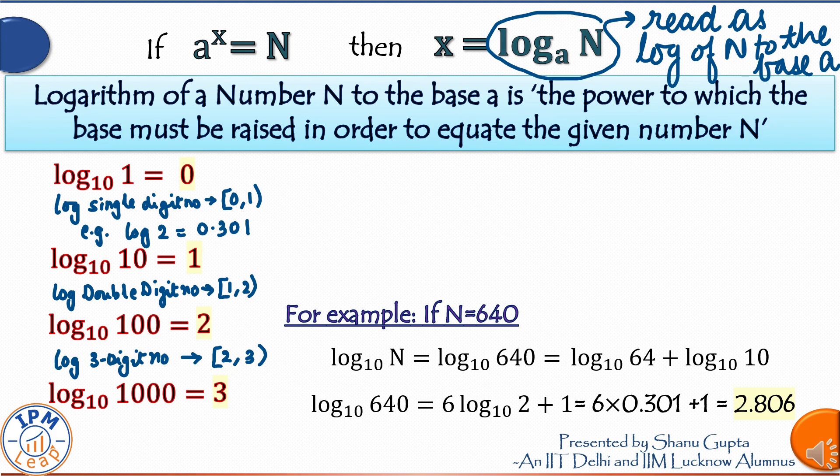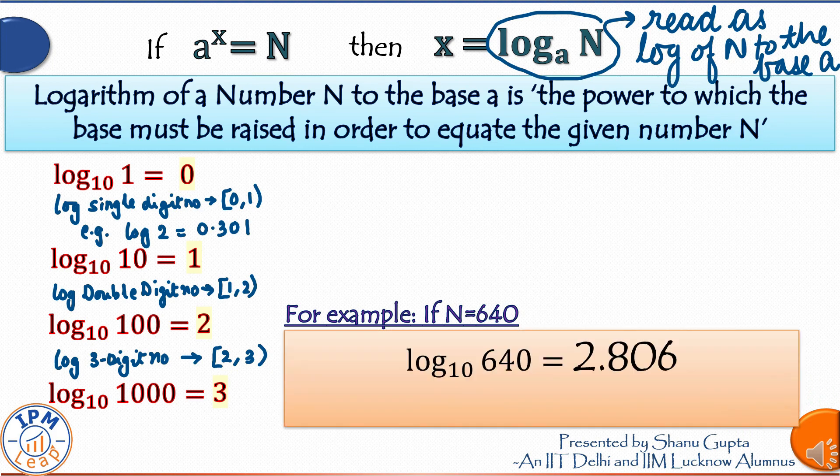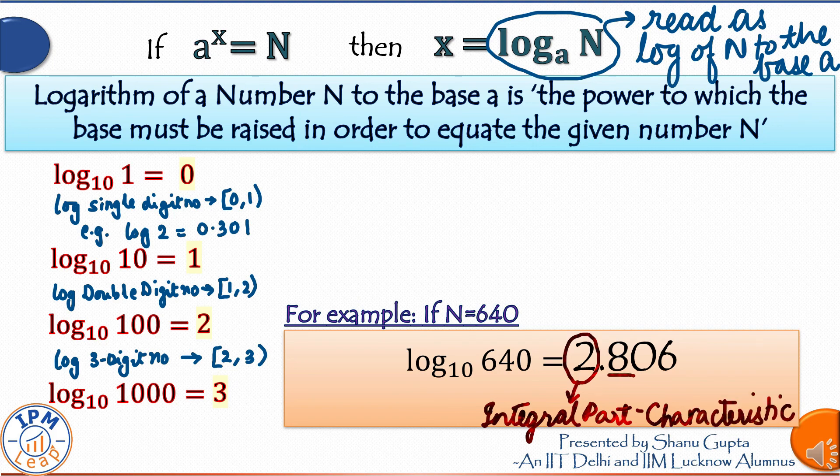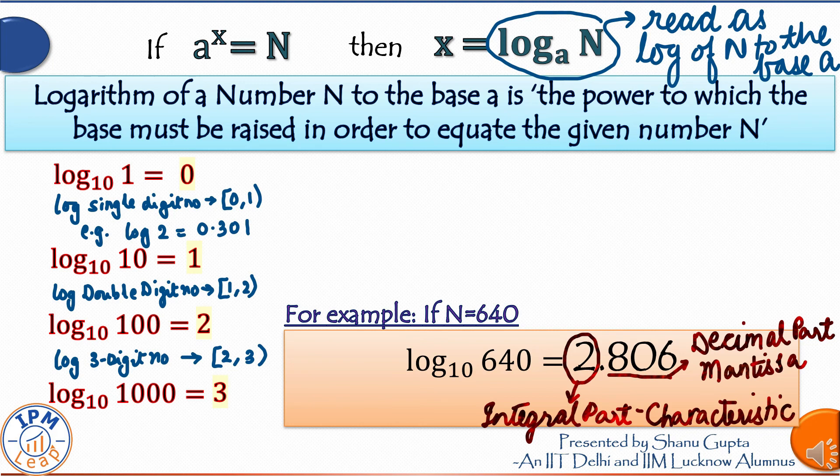Now this value log of any number will have two parts. One is the integer part called characteristic. The other part is called mantissa. So while estimating number of digits, we just need the characteristic. Ignore the decimal part mantissa.